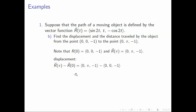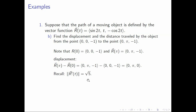We get the difference of these two vectors and that is precisely the vector (0, π, 0). Now, for the distance, we recall that the magnitude of r prime of t is equal to square root of 5.